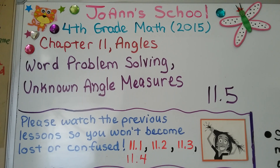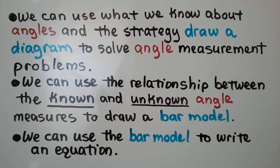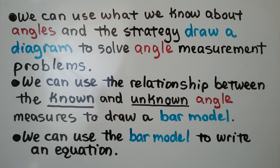Lesson 11.5: Word Problem Solving Unknown Angle Measures. We can use what we know about angles and the strategy of drawing a diagram to solve angle measurement problems. We can use the relationship between the known and unknown angle measures to draw a bar model, and we can use the bar model to write an equation.